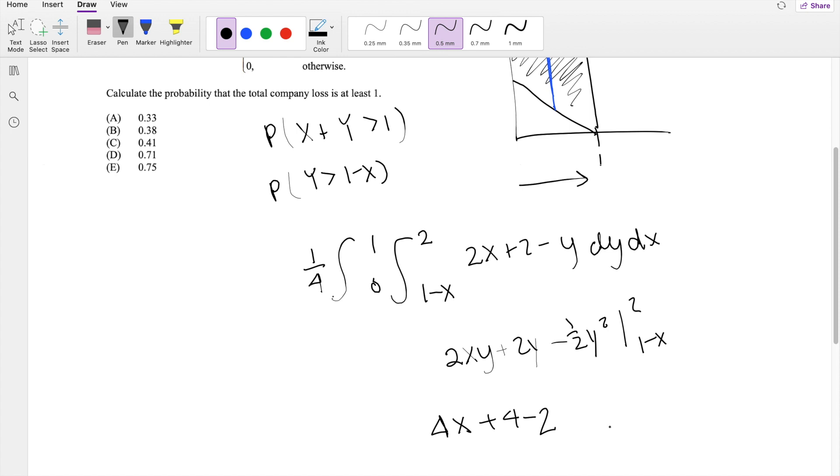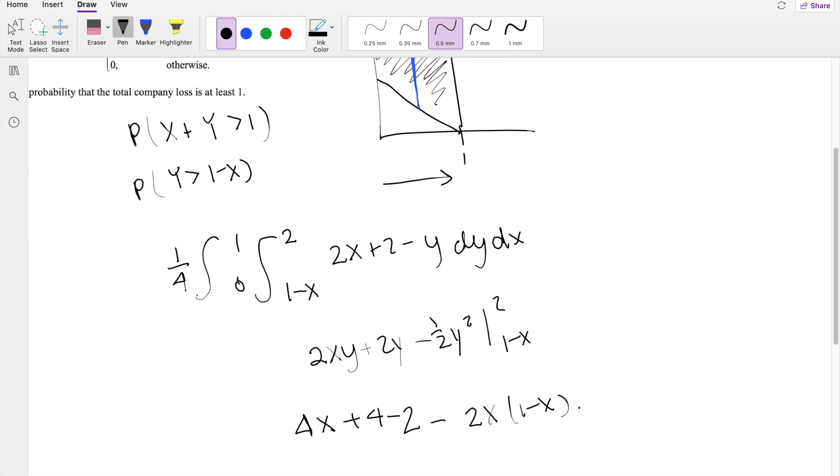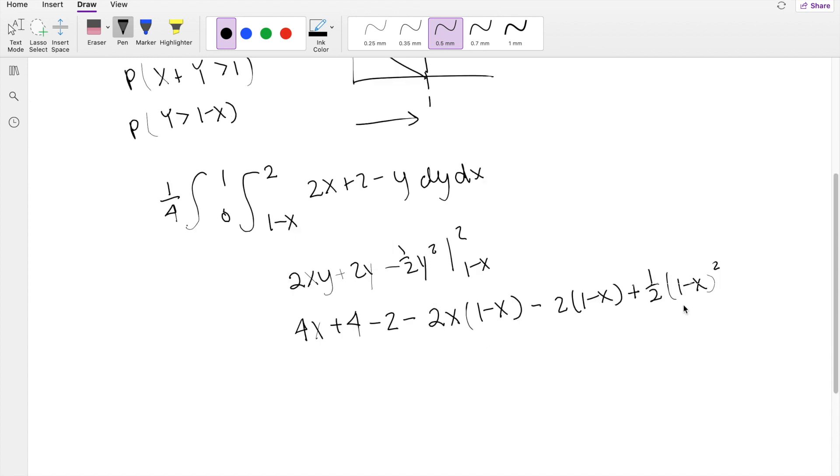Minus 2X times 1 minus X, or minus 2 times 1 minus X, minus—minus—positive 1 half times 1 minus X squared.